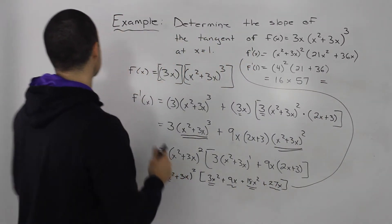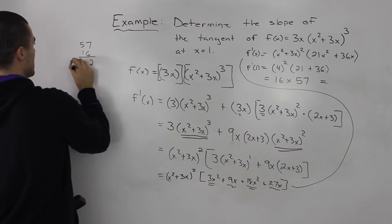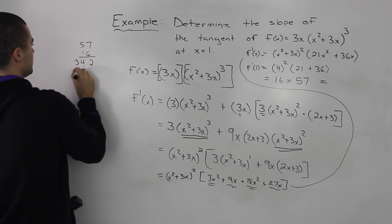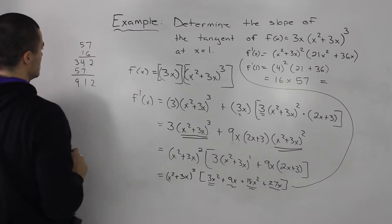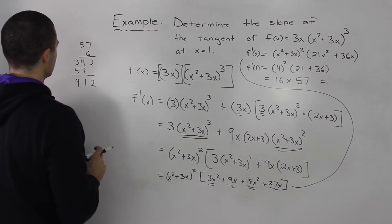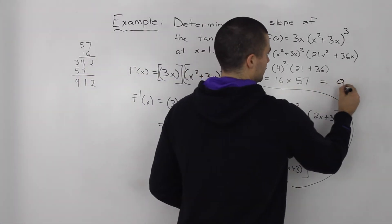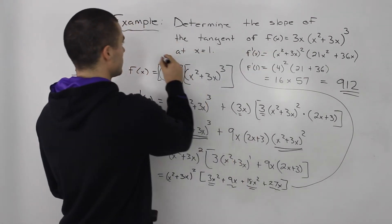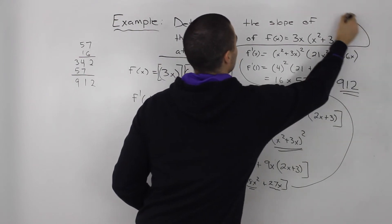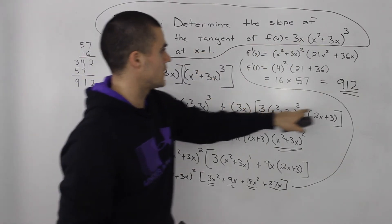Let's compute 57 times 16 quickly. That gives us 912. So the slope of the tangent of this function at x = 1 is 912. We applied the product rule, then applied the power of a function rule within the product rule, and did some algebra.